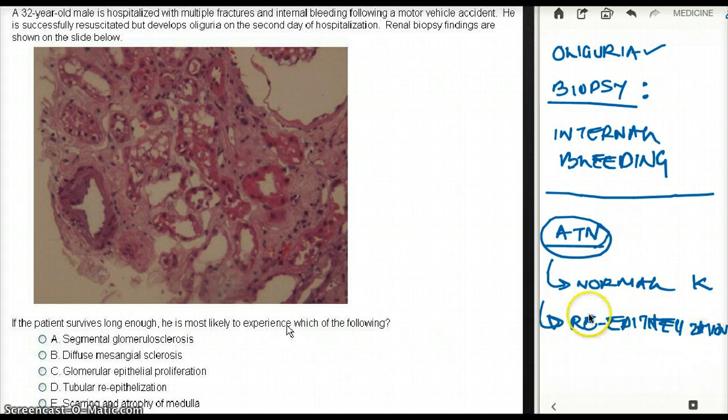So now let's see if my answer choices correspond to what I have thought about. The choices say, A, segmental glomerulosclerosis. That doesn't seem like. Glomerulosclerosis has nothing to do with ATN, so A is not my answer.